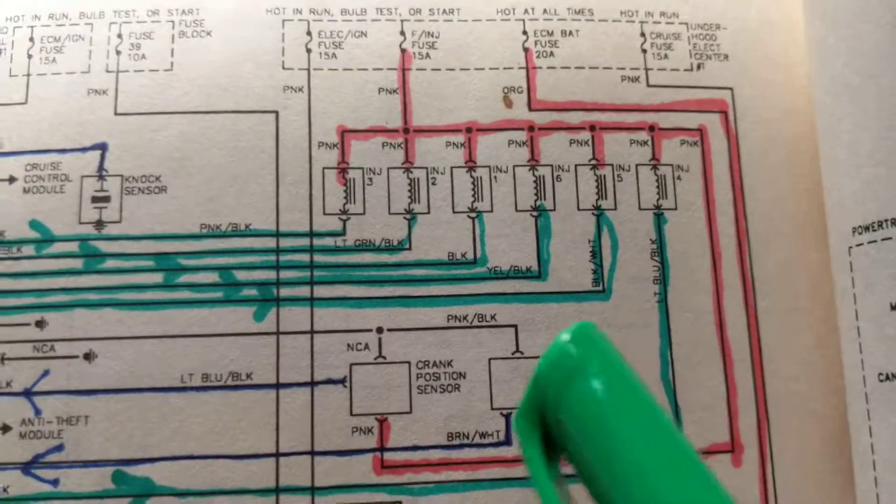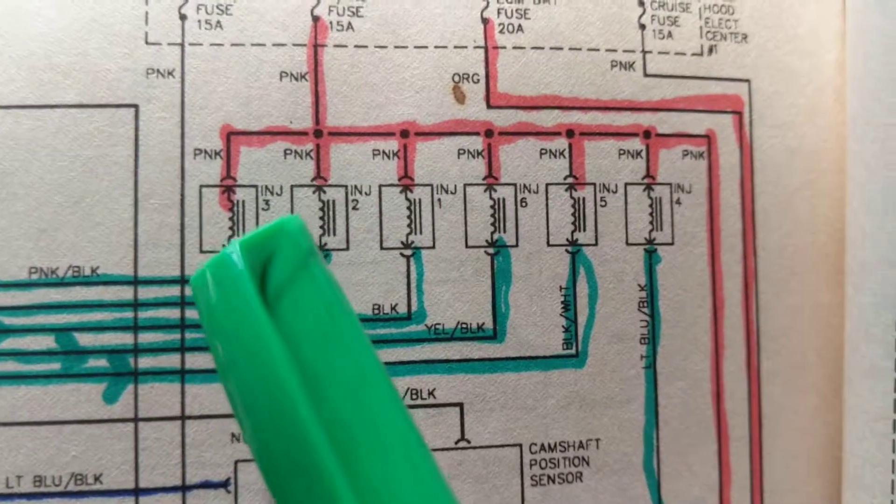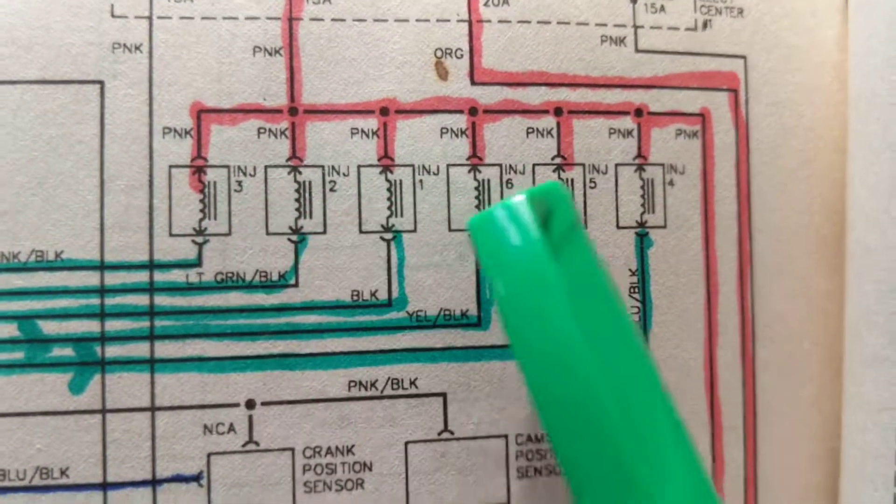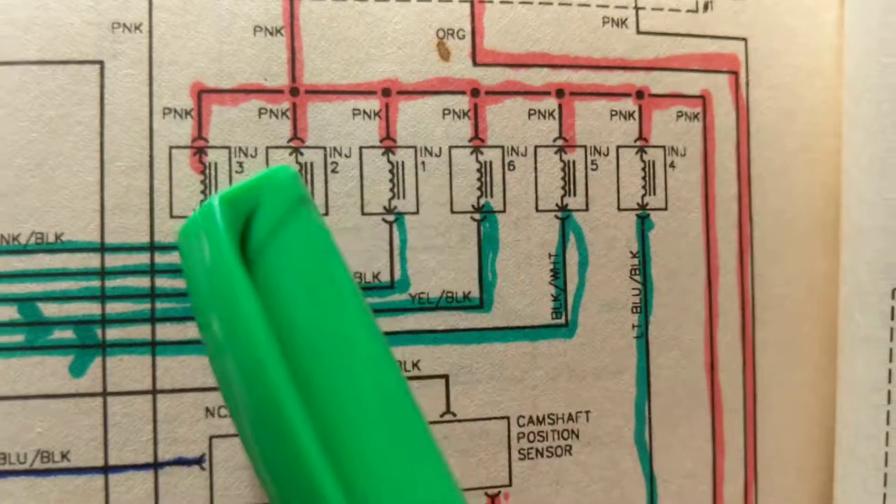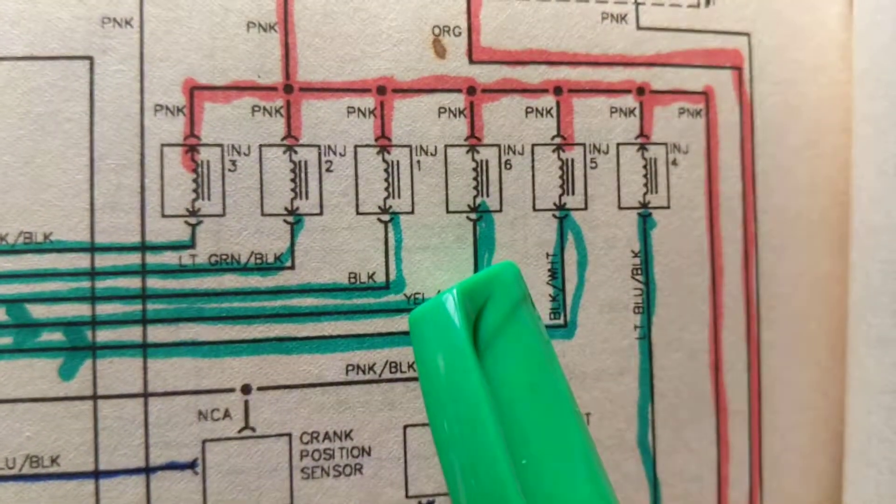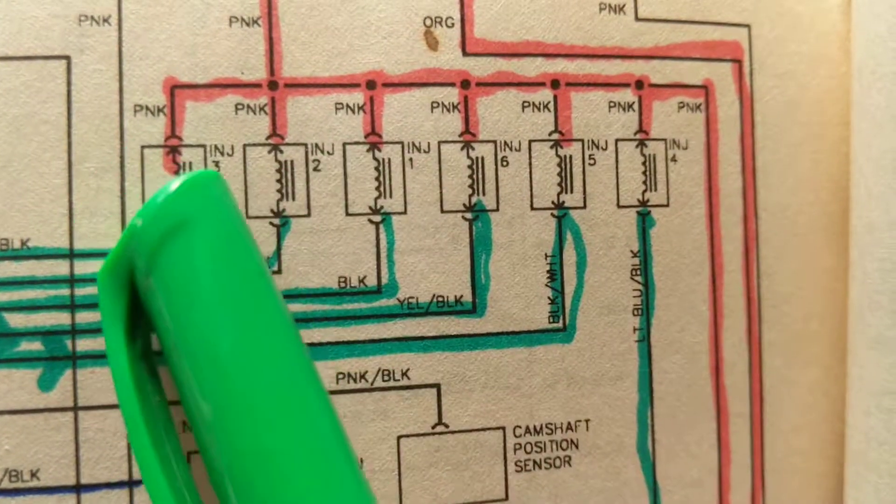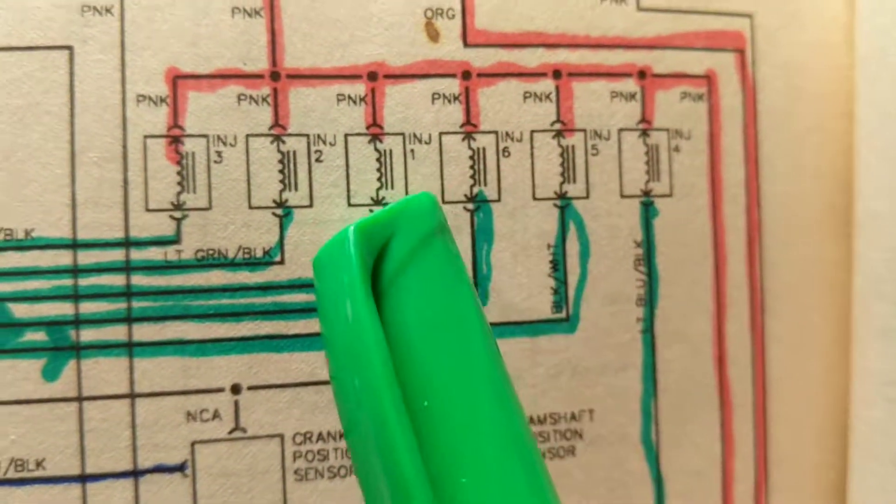So therefore, how many cylinders? You could tell by how many fuel injectors we have - six. That means there's six cylinders. If there would be four cylinders, there would only be four injectors. If there would be eight cylinders, there would be eight fuel injectors.